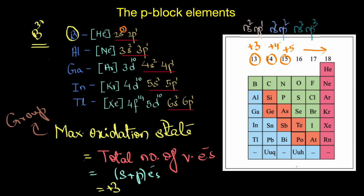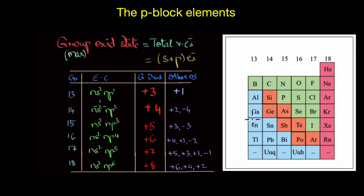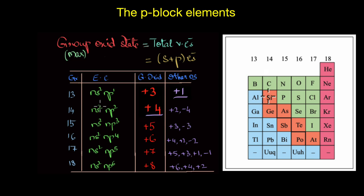However, all elements within a particular group need not have only the group oxidation state. In fact, p-block elements are known to have multiple oxidation states. For example, in group 13 the elements show a +1 oxidation state in addition to the group oxidation state of +3. Similarly, in group 14 the elements show +2 and −4 oxidation states in addition to the group oxidation state of +4.